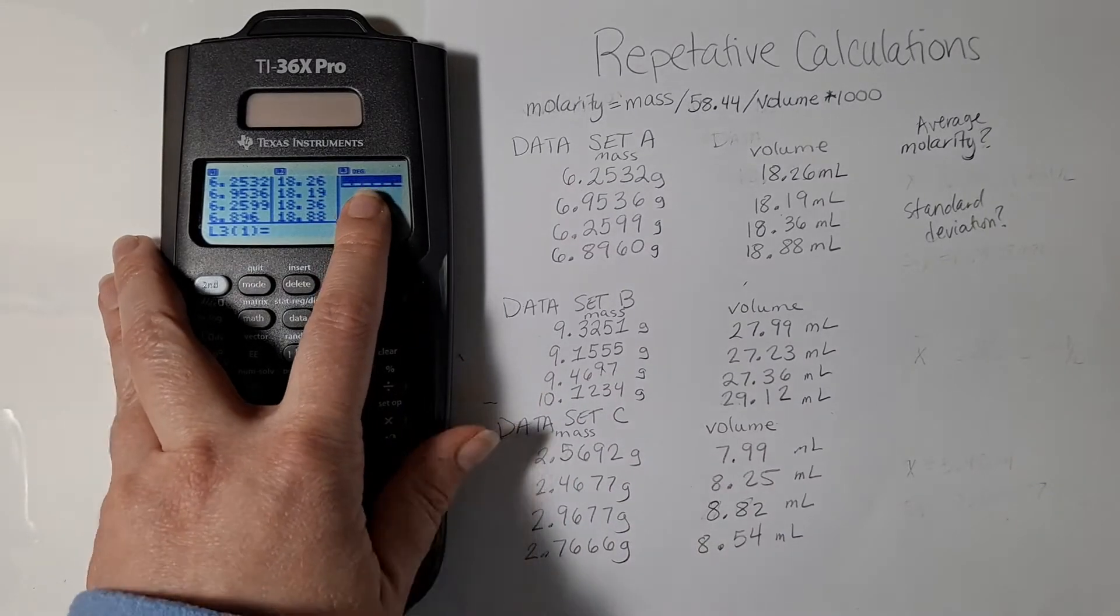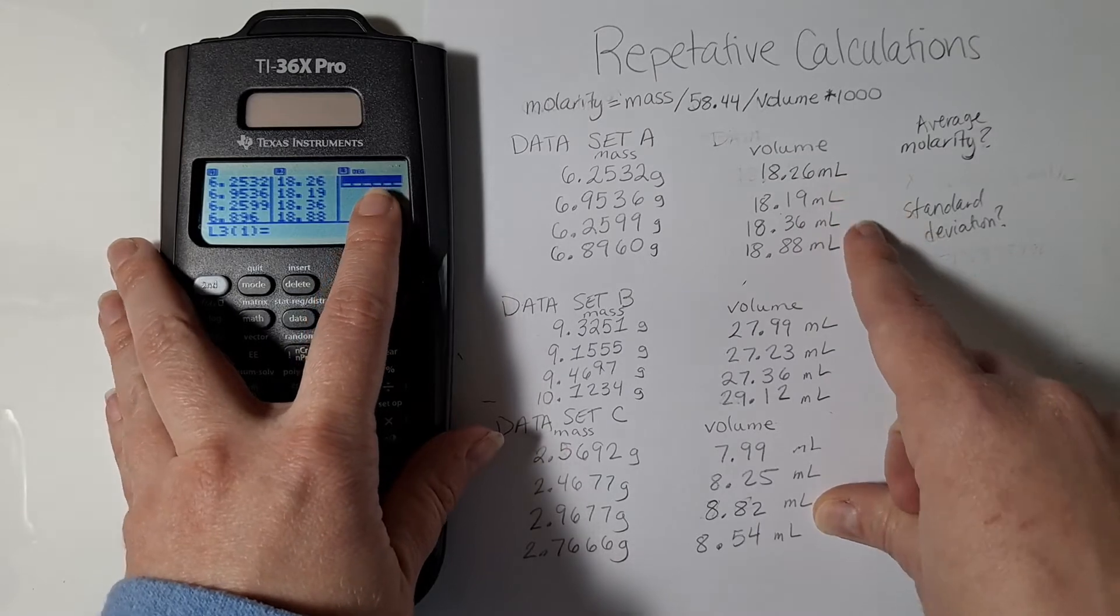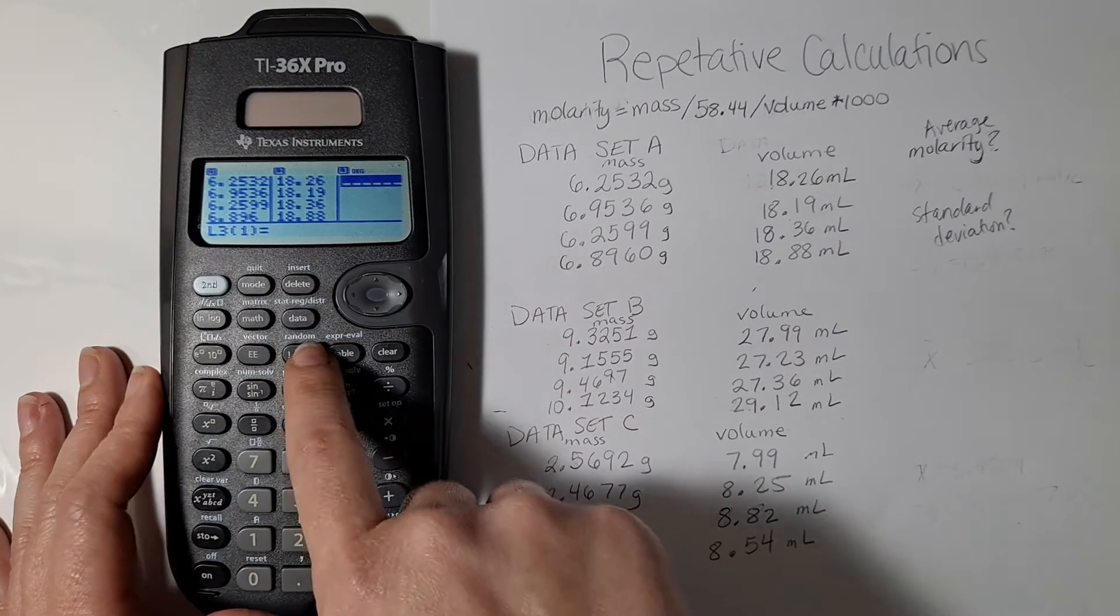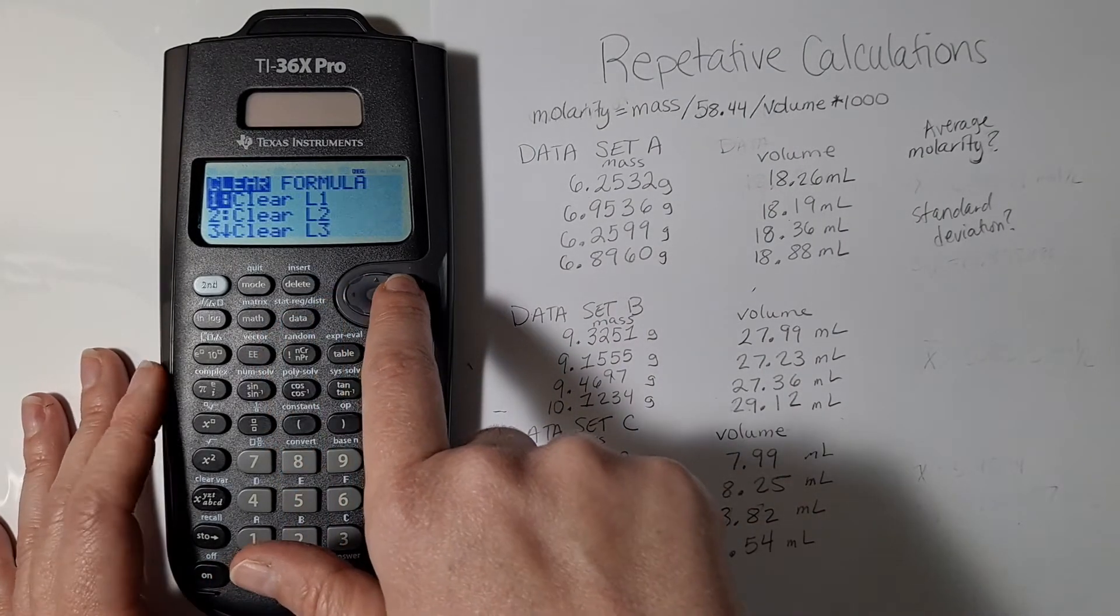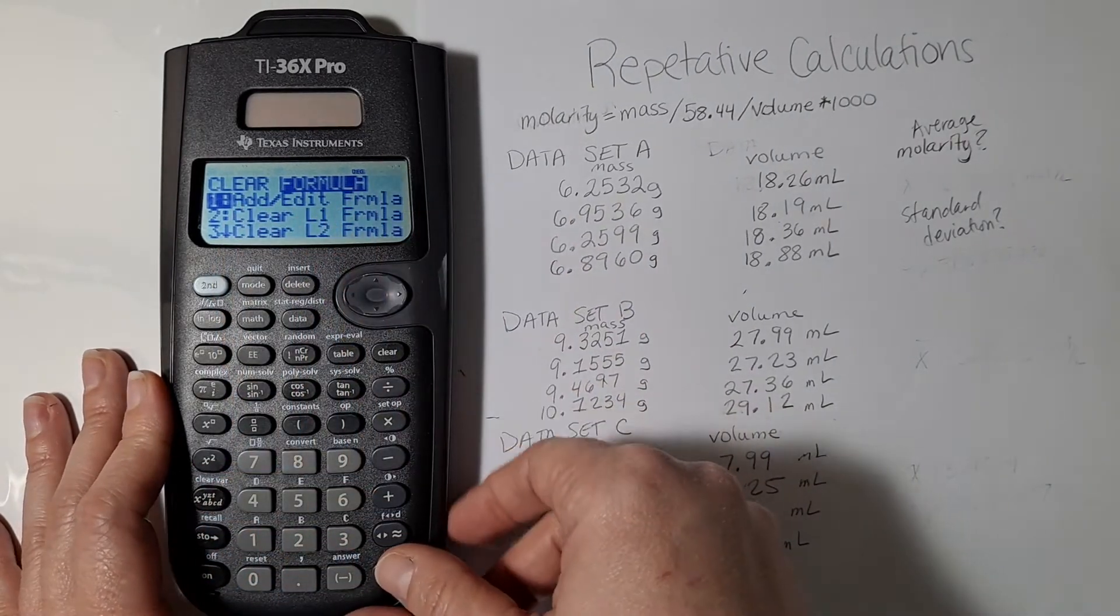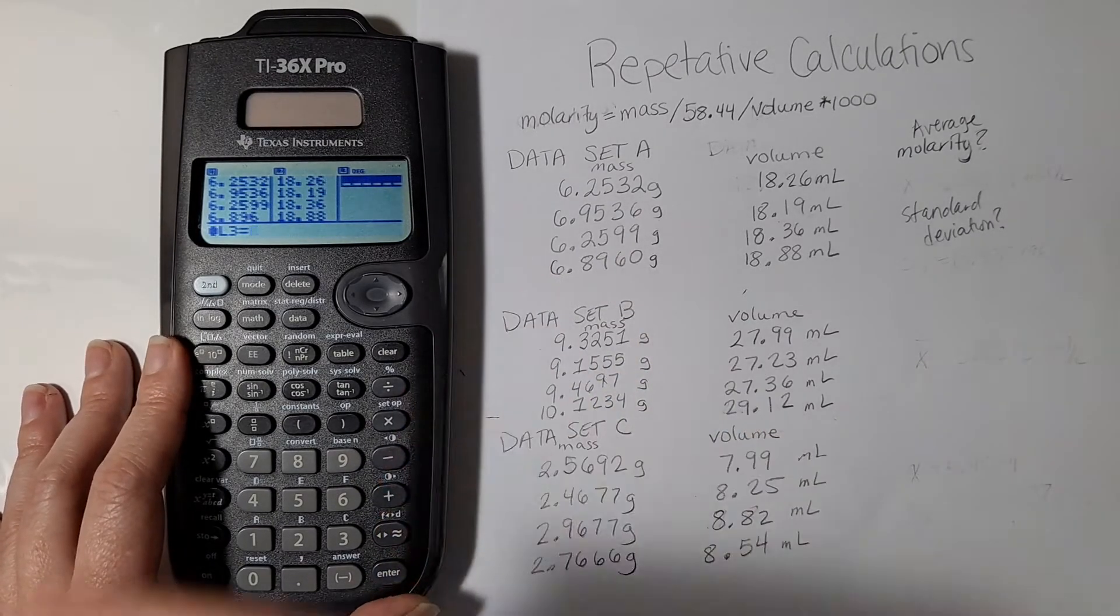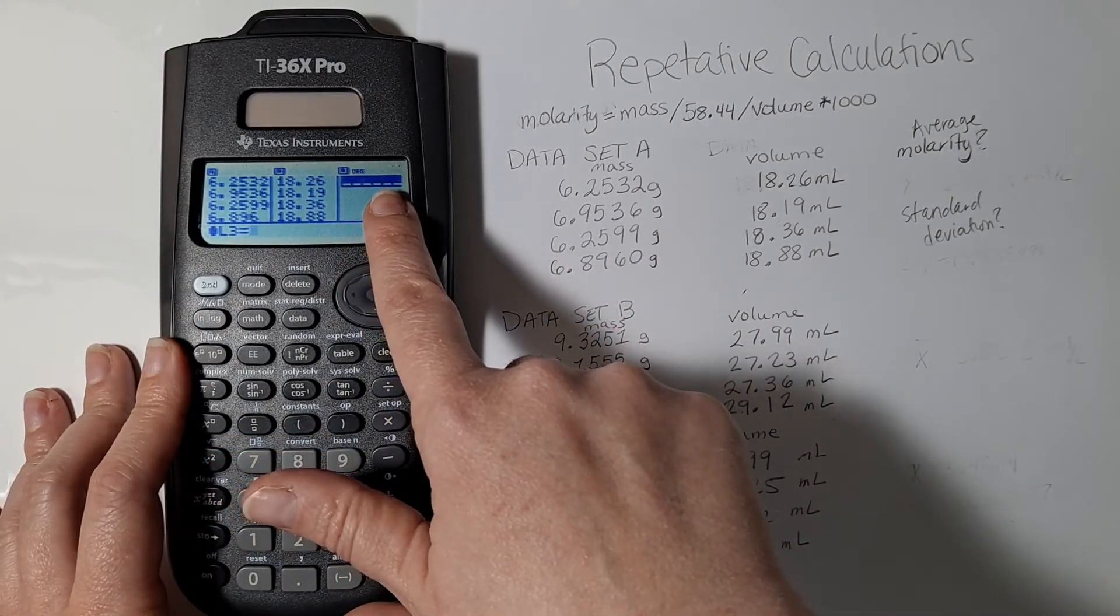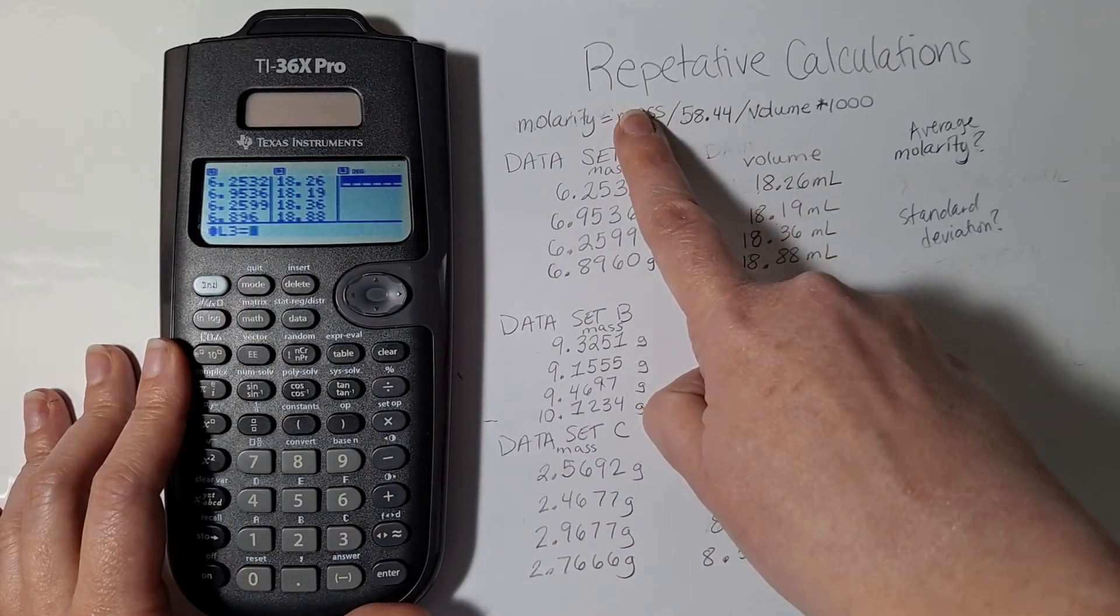Now over here in list 3 I want the molarities to appear. So the first thing I need to do is tell my calculator that list 3 will be equal to a formula. So I hit the data button and then I scroll over to where it says formula, and I need to add and edit the formula in that column. So I click select add edit formula and now I'm in the equation editor for this column. Now I need to tell my calculator that I need to reference my mass column because that's the first thing in my calculation.